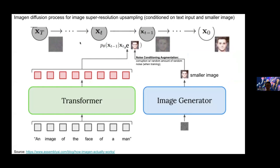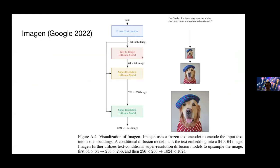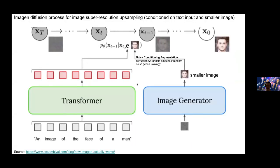There's also a diffusion model for super-resolution upsampling — going from the smaller image to the bigger image. In this case, we add more to the condition: we take the small generated image, add a random amount of noise to it during training, and include that corrupted smaller image as part of the condition. So you're conditioning on both the noised larger image and the corrupted smaller image and the text simultaneously when learning the denoising process for the larger image. This noise conditioning augmentation makes the model more robust — adding noise during training can often make a model more robust in machine learning.